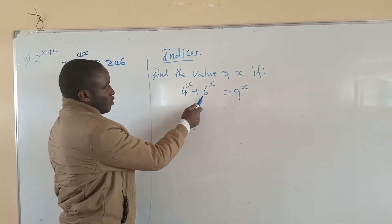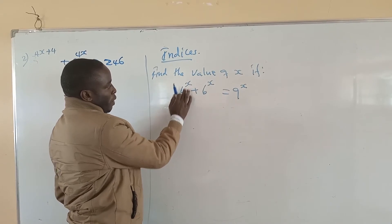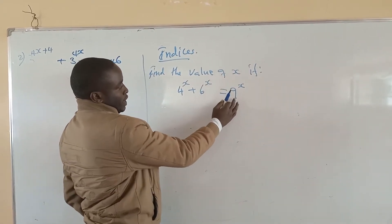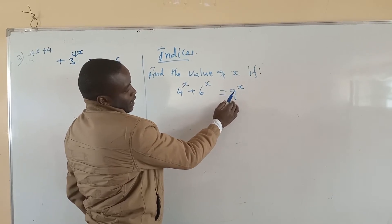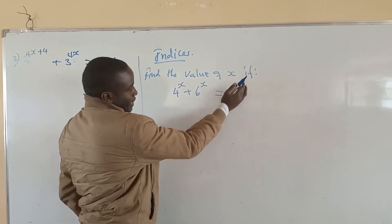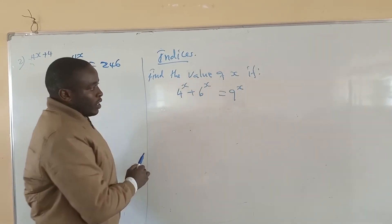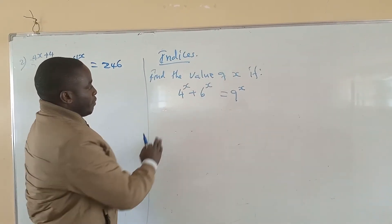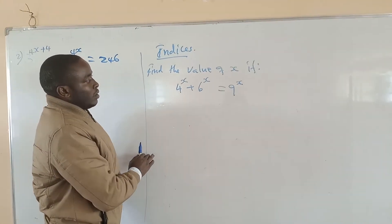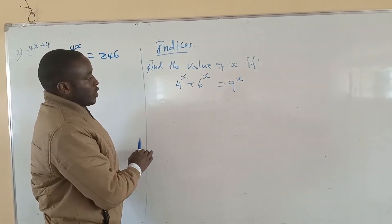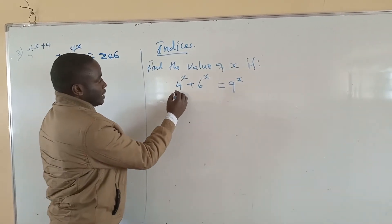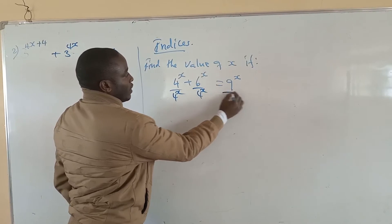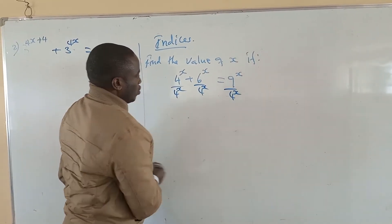If this was 2 to the power x and 4 to the power x equaling 8 to the power x, it could have worked, because you could have arranged them to a base of 2. But still it is okay because you can solve it. What you do is divide everything by 4 to the power of x.